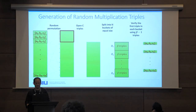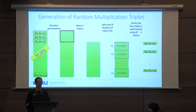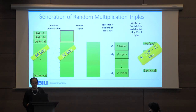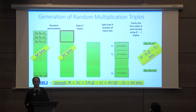Looking at the communication cost of this process: to generate the initial list of m random triples we need m bits per party; we then open c triples at three bits each, costing 3c bits; and we run the verification sub-protocol beta minus one times for n buckets at two bits each. This gives an overall communication cost formula that depends on beta — the bucket size — and c — the number of opened triples.